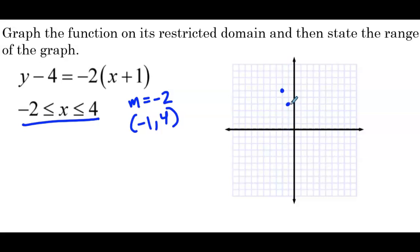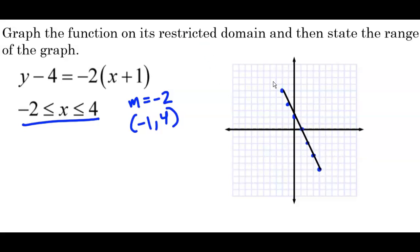Then going forward with a slope of negative 2 — down 2 to the right 1 — we pass x equals 1, x equals 2, x equals 3, and one more: down 2 to the right 1 lands us at x equals 4. We've only plotted points where x is between negative 2 and 4 inclusive. Now we connect our points from x equals negative 2 to x equals 4. Notice there are no arrows — we don't put arrows on either end because we're only graphing on this restricted domain.